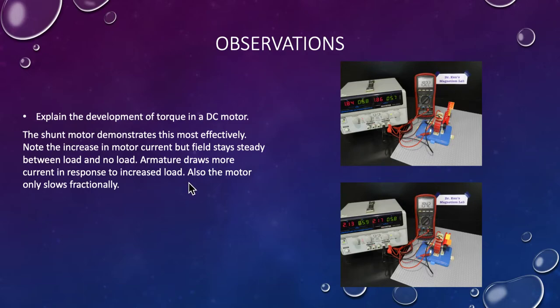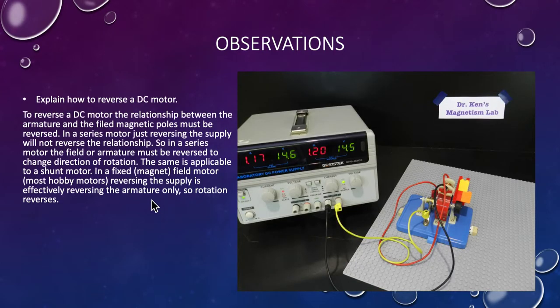Development of the torque of the motor. The shunt motor demonstrates that this is most effective. Note the increase in the motor current, but the field stays steady between load and no load. The armature draws more current in response to an increased load. Also, the motor only slows fractionally.